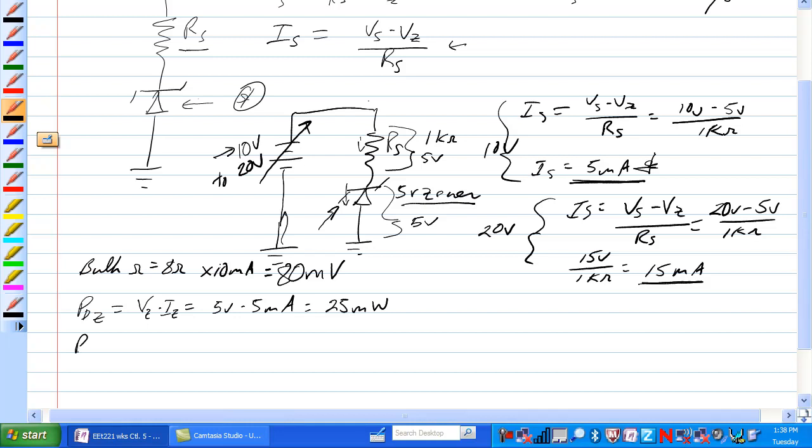Power dissipated by the Zener when voltage of the Zener is 5 volts. Let's look at it when we're at 15 milliamps here, times current through the Zener is equal to 5 volts times 15 milliamps is equal to 75 milliwatts.